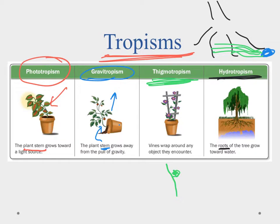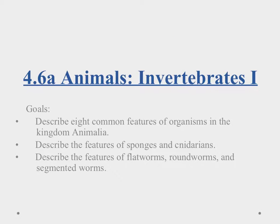That's it for our video today. Good luck with the lessons and we will see you in the next video. Aloha and welcome to our first video on animals — the Invertebrate 1 video. In this video we will describe the eight common features of organisms in the Kingdom Animalia — what makes them an animal — and then we will describe features of sponges, cnidarians, flatworms, roundworms, and segmented worms.